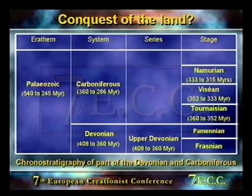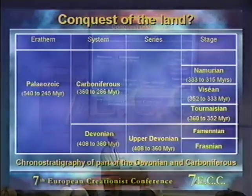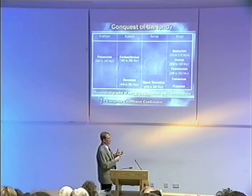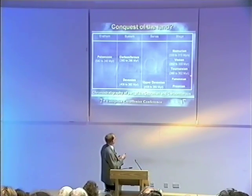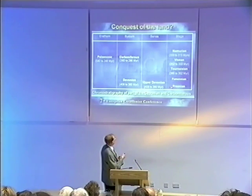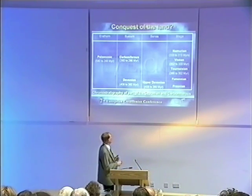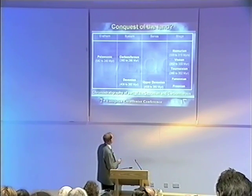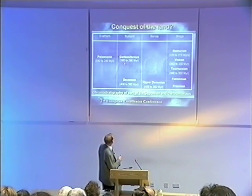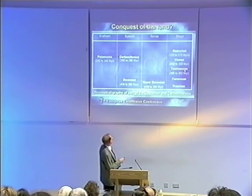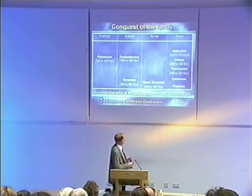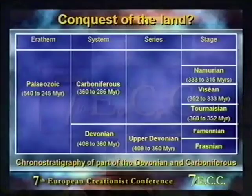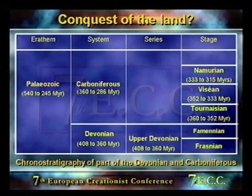The Upper Devonian is divided into two stages: the Frasnian and the Famennian. The Frasnian is the oldest and the Famennian is younger. We may later briefly discuss some of the Lower Carboniferous, which has subdivisions including the Tournaisian, the Visean, and the Namurian. If you can remember these terms — Upper Devonian consisting of Frasnian and Famennian — that will help greatly.